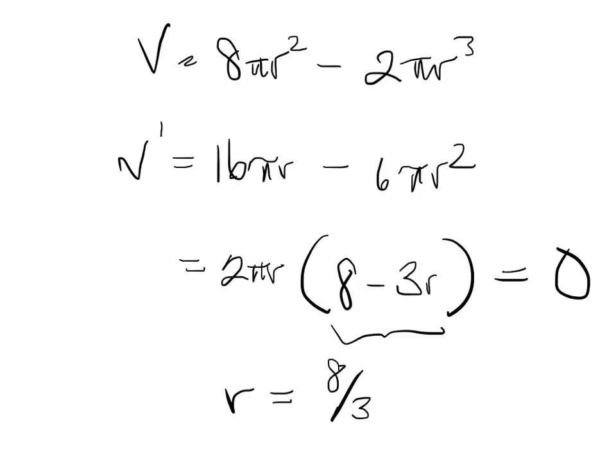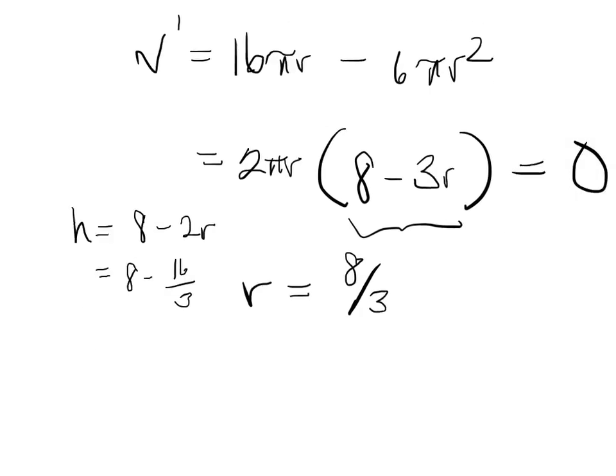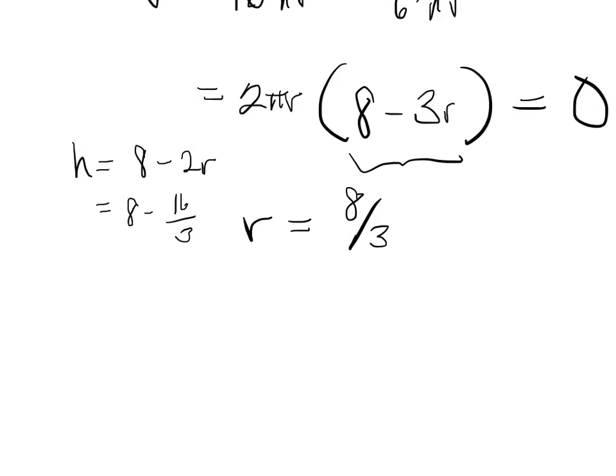You can go back and plug that in. h was 8 minus 2r, which is 8 minus 16 over 3. What's that? 24 over 3 minus 16 over 3 is 8 over 3.